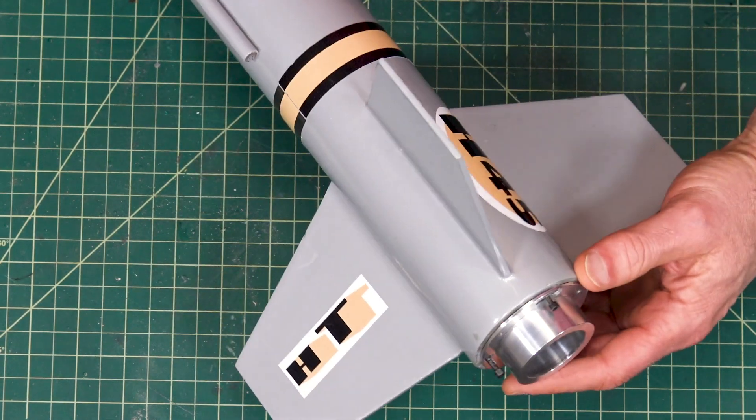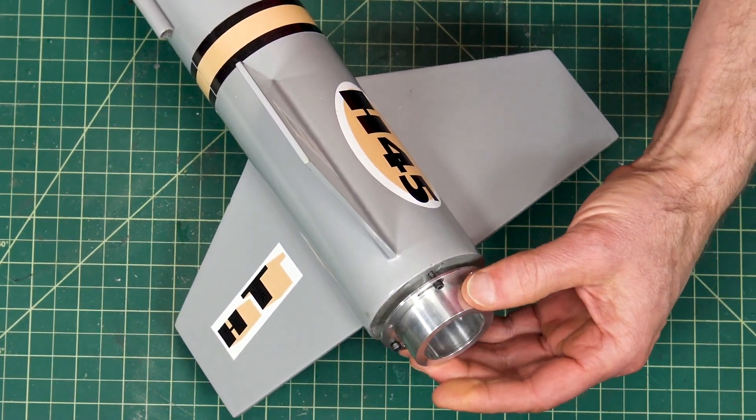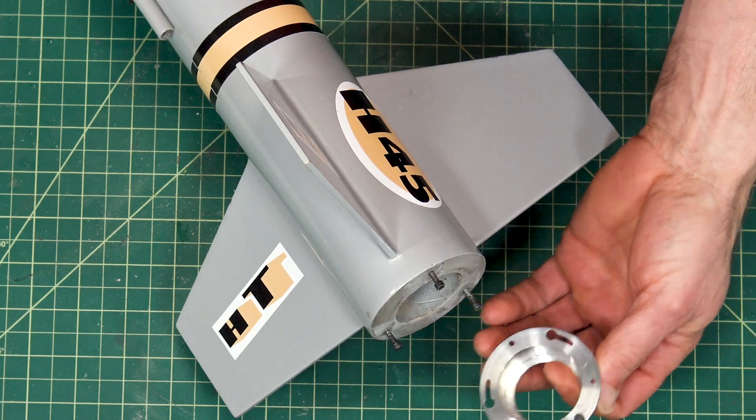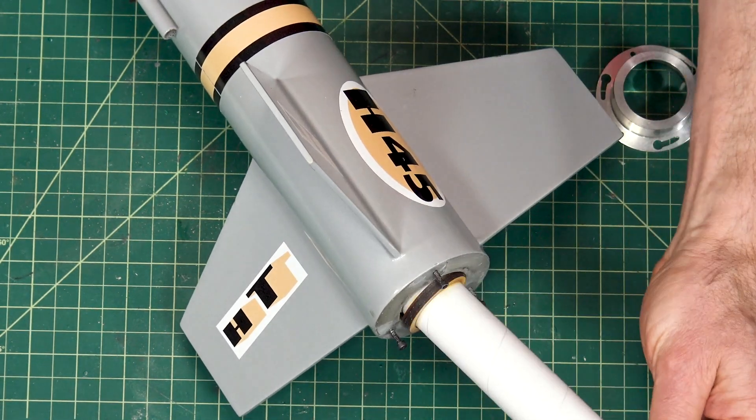My nose cone is pinching the wall here, so you can take that off and you can put in your engine mount adapter.